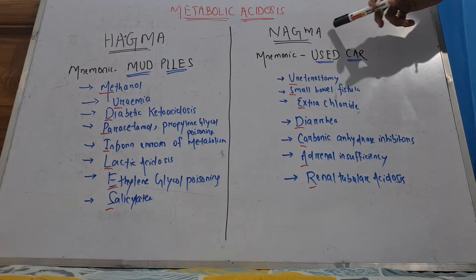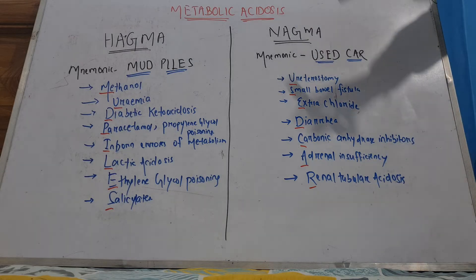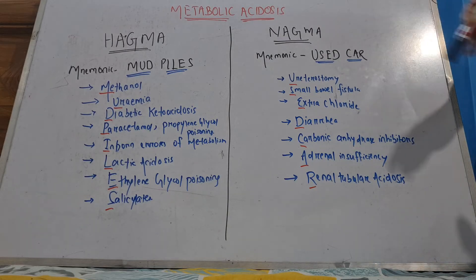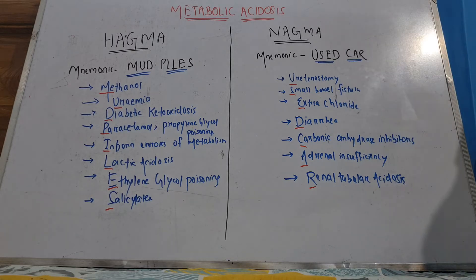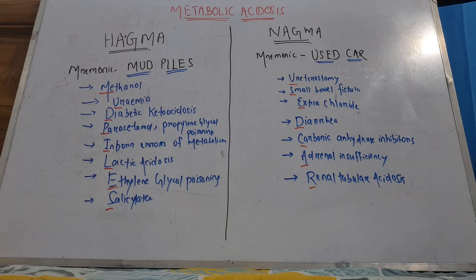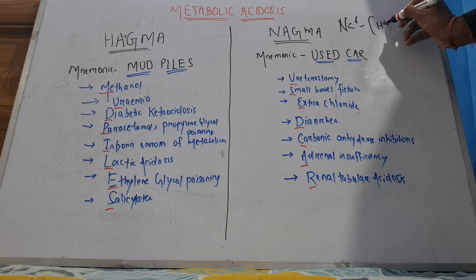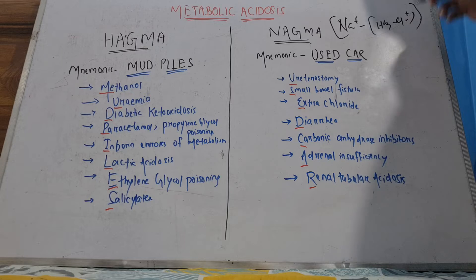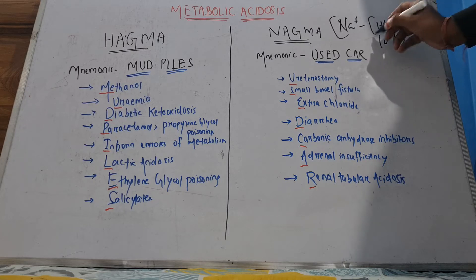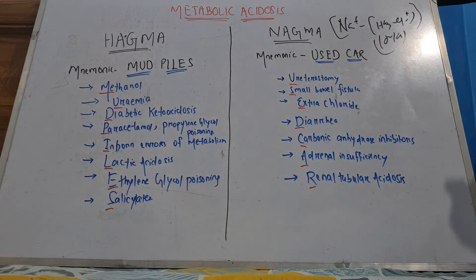One is high anion gap metabolic acidosis and one is normal anion gap metabolic acidosis. The mnemonic for high anion gap is MUD PILES, and for normal anion gap metabolic acidosis the mnemonic is USED CAR. Before going to these mnemonics, we need to know what the anion gap is. Anion gap is basically the positive ions minus the negative ions — that means sodium minus your bicarbonate and chloride combined. The normal anion gap range is 12 plus or minus 2, meaning 10 to 14. If it is more than 14 then it is high anion gap; if within this range it is normal anion gap.